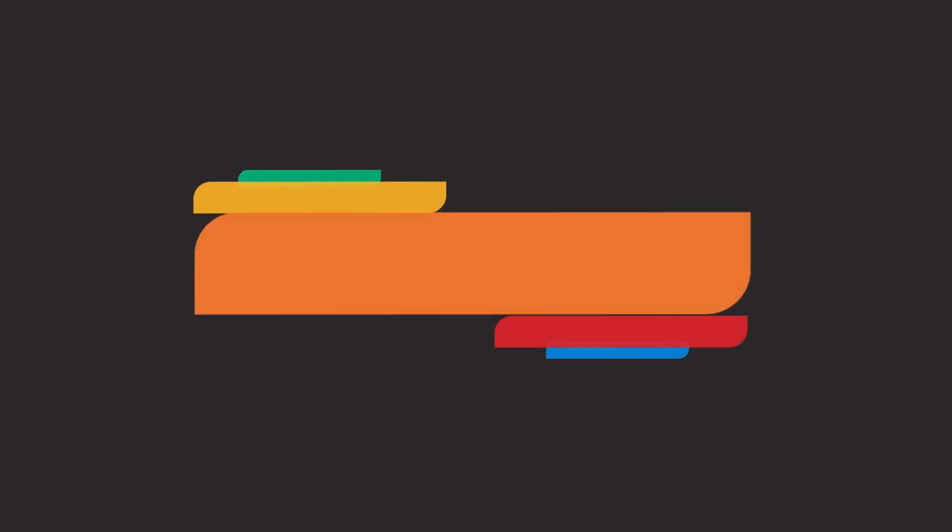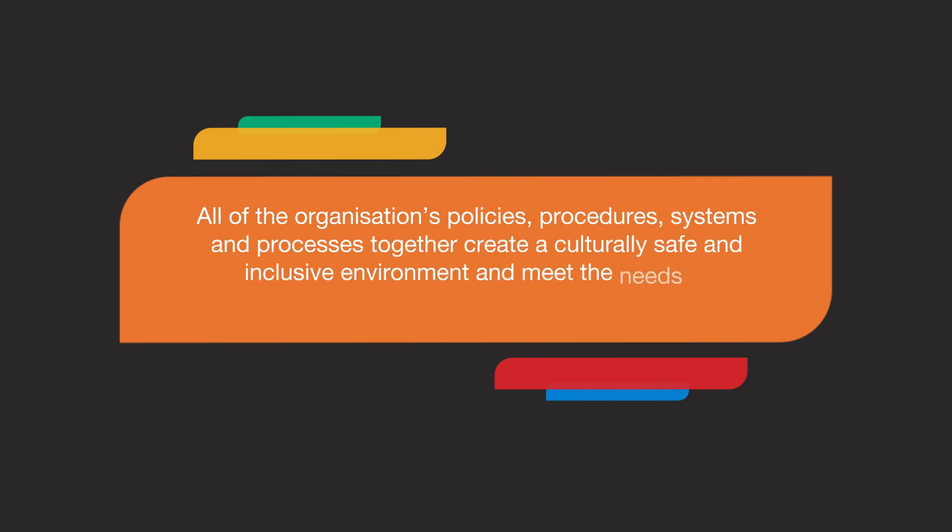Minimum requirement 1.5: all of the organisation's policies, procedures, systems and processes together create a culturally safe and inclusive environment and meet the needs of Aboriginal children, young people and their families. Statements of support such as displaying the Aboriginal flag or having an Acknowledgement of Country plaque are important but these alone will not make a child safe. All organisational policies, procedures, systems and processes need to meet the needs of Aboriginal children and their families. Your organisation's approach to creating cultural safety needs to be embedded throughout the organisation. Organisations will be at different stages of their cultural safety journey and the process is one of continuous improvement. A good place to start is to look at what your organisation already does to provide cultural safety and identify any gaps. Creating a culturally safe environment takes time, dedication and meaningful engagement. Organisations need to commit long-term and take meaningful action each year to keep progressing their compliance with Standard 1.